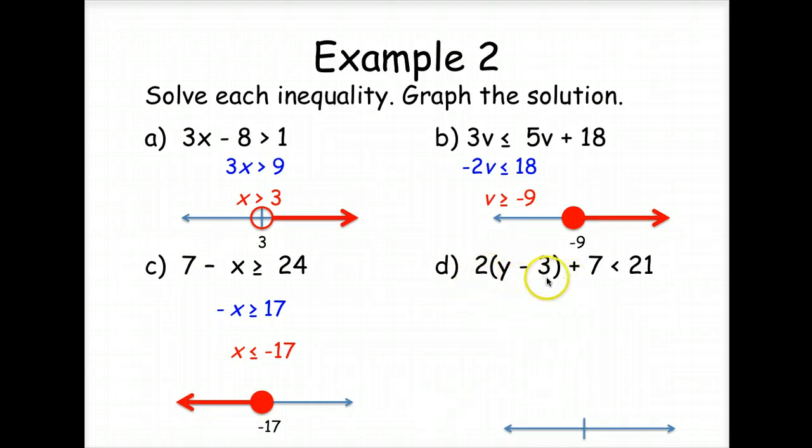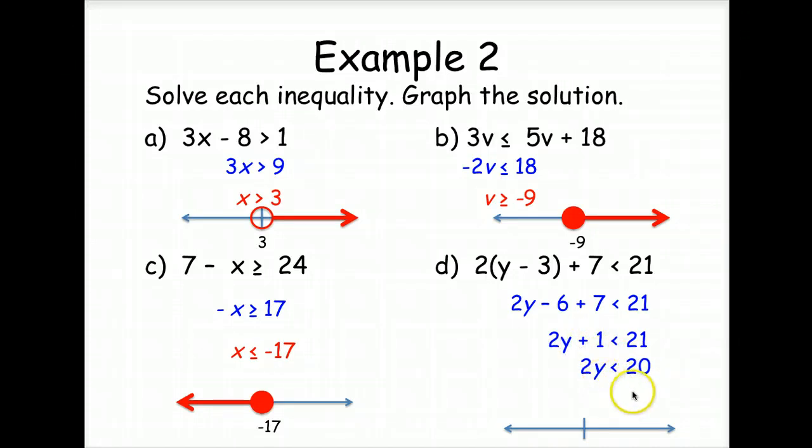We're going to use the distributive property here to multiply the two, distribute it across the parentheses. We've got some like terms we can take care of next. Then we need to get rid of the 1. So we're going to undo the positive 1 by subtracting 1 from both sides. Divide both sides by 2. So it's not a negative 2, so our sign stays the same. So we're at a 10. And because it's just less than, it's an open circle. And we go less than.